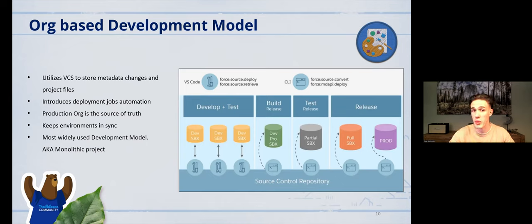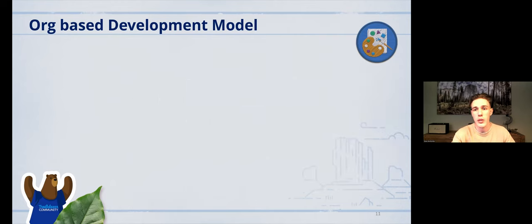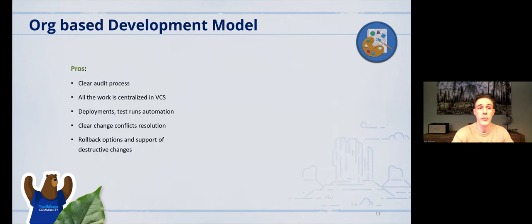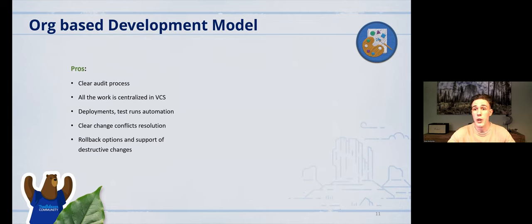This is one of the most widely used development models. Single project repositories are often called monolithic projects. This model has really strong pros: a very clear audit process, history of changes, all work centralized in version control, the possibility of automation, easy conflict resolution, and the ability to have destructive changes.